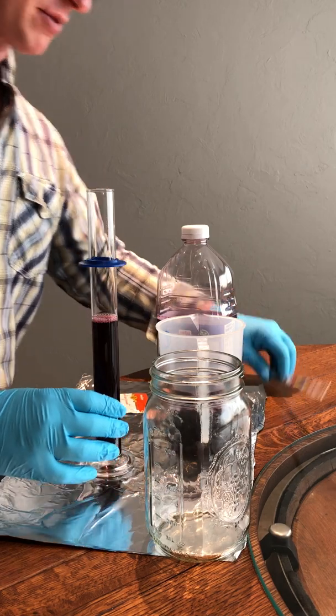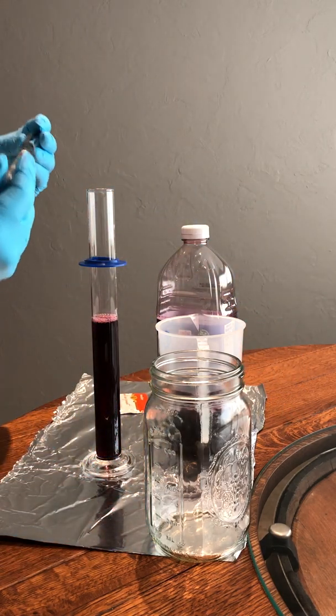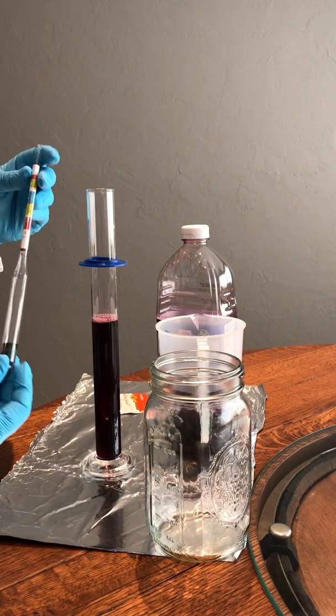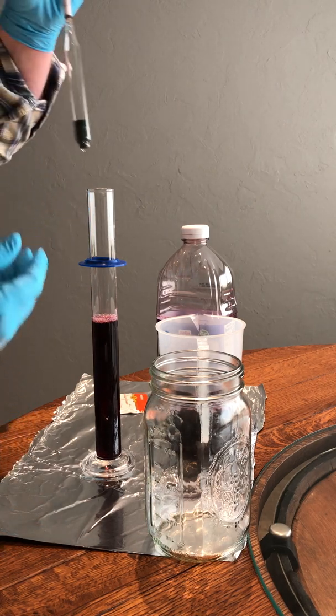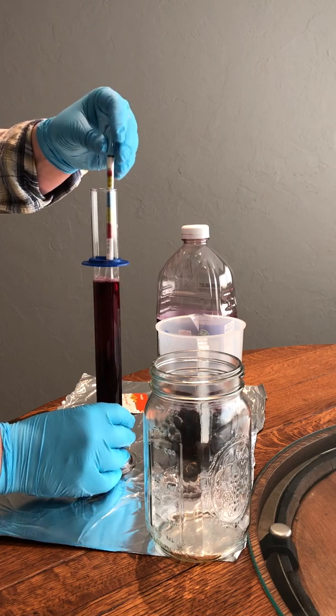This is store-bought grape juice, not fresh off the vine. This is a hydrometer, and it has different levels of markings for specific gravity as well as for percent alcohol by volume.